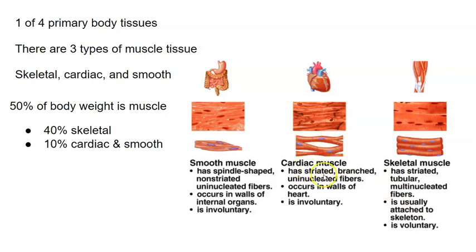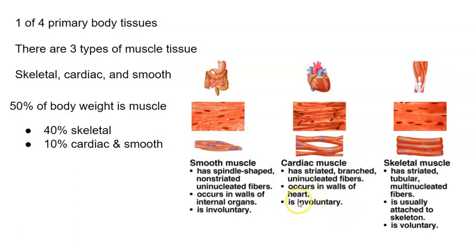Cardiac muscle also has striations, but with a couple of significant differences. It is branched, and it features intercalated discs — structures where two adjacent cells physically connect to each other. Cardiac muscle cells are shorter and more branched than skeletal muscle fibers, which can be up to a foot long. Cardiac muscle is involuntary, meaning you don't have control over how your heart beats.